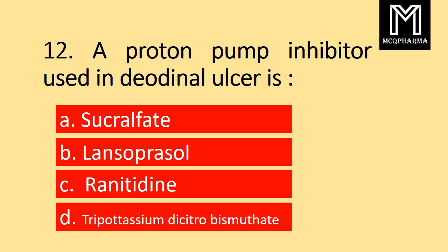Question number 12. A proton pump inhibitor used in duodenal ulcer is: Option A Sucralfate, B Lansoprazole, C Ranitidine, D Tripotassium citrobismuthate. Correct answer: Option B Lansoprazole.